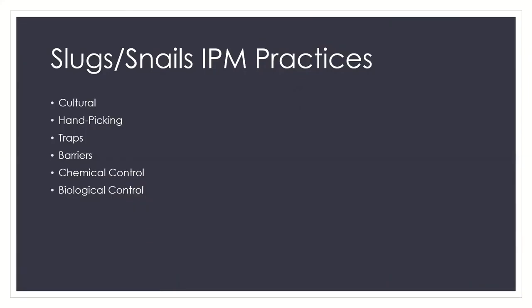For slugs, a good management program relies on a combination of methods. The first step is eliminating places where they can hide during the day in your production area — boards, stones, debris, weedy areas, leafy branches close to the ground, ivy. Make sure your vegetable gardens and susceptible plants are as far as possible from slug hiding areas. Reducing shelter means survivors will congregate in remaining spots, making them easy to locate and remove.